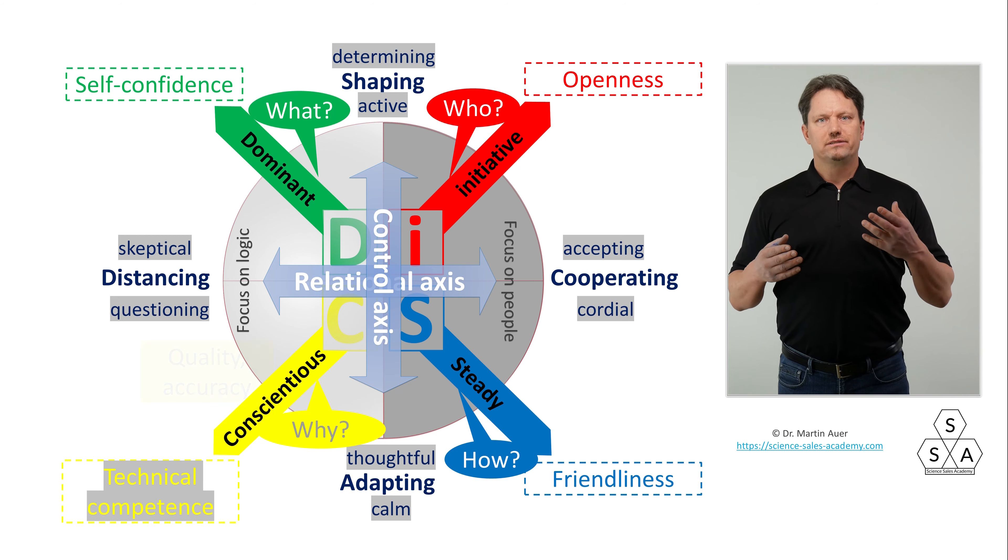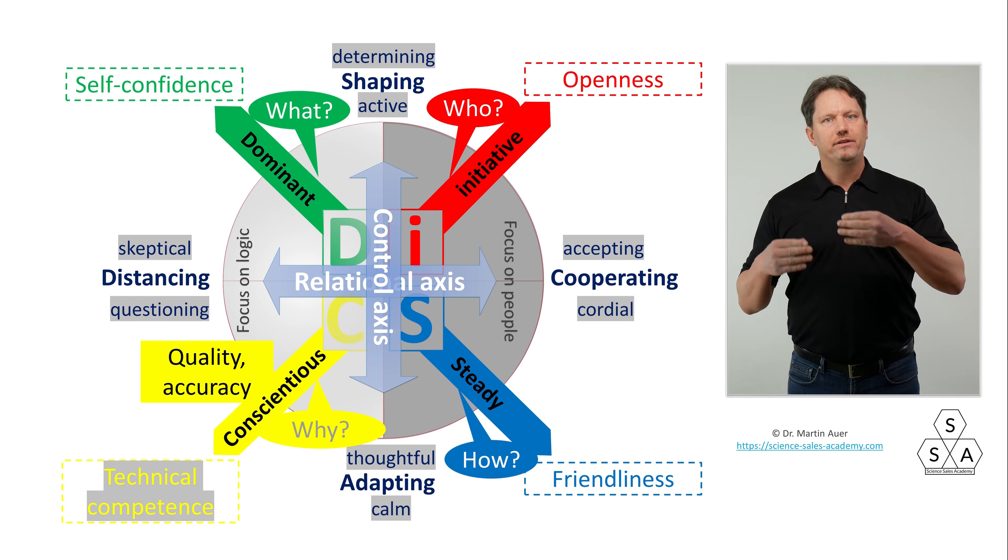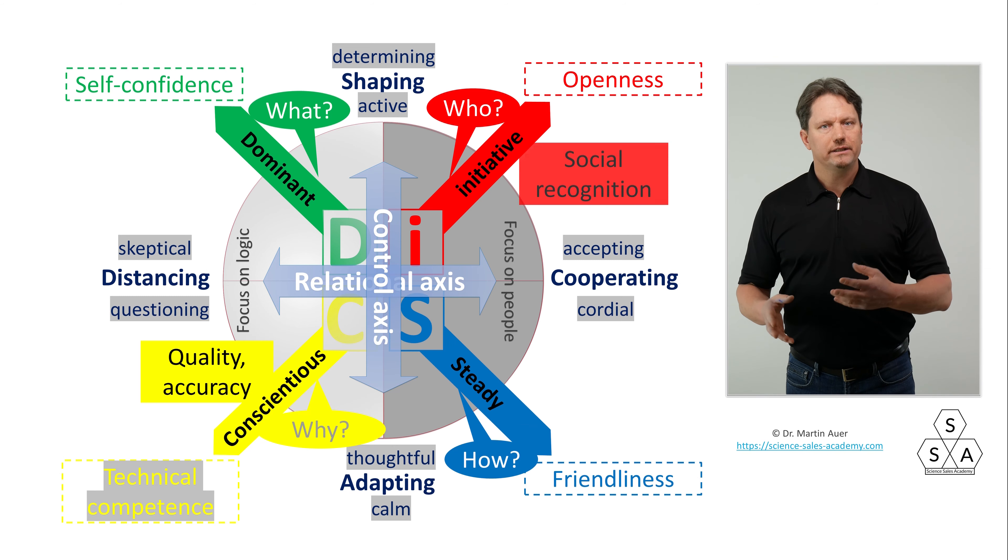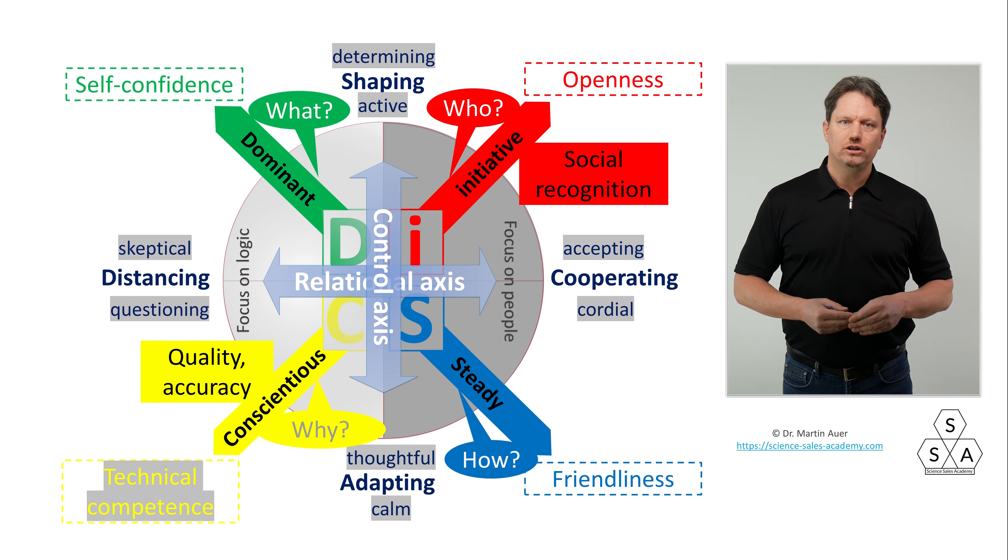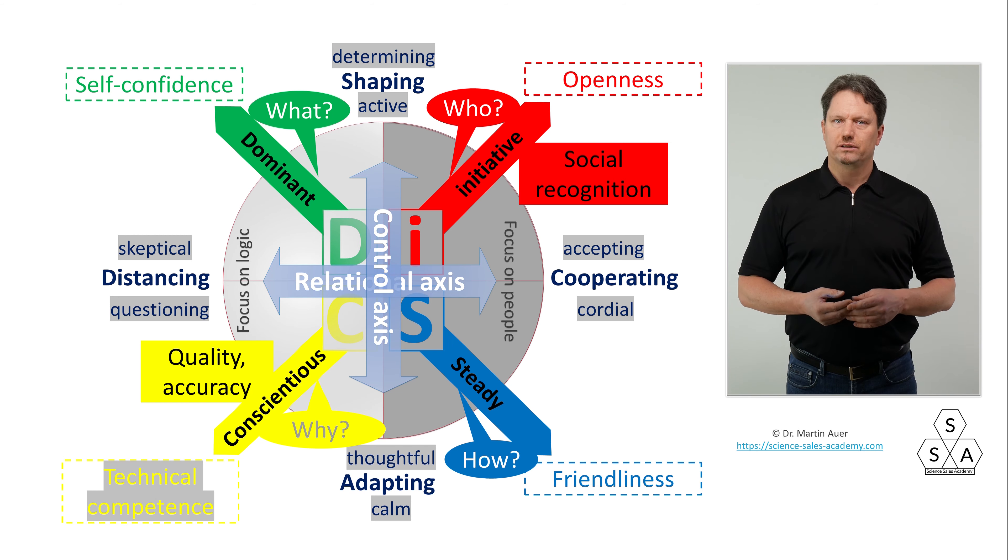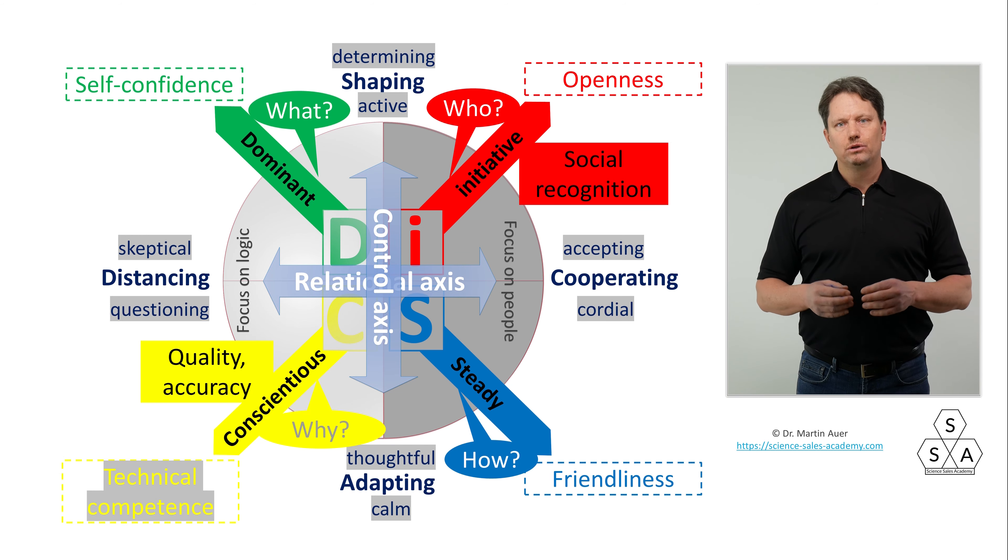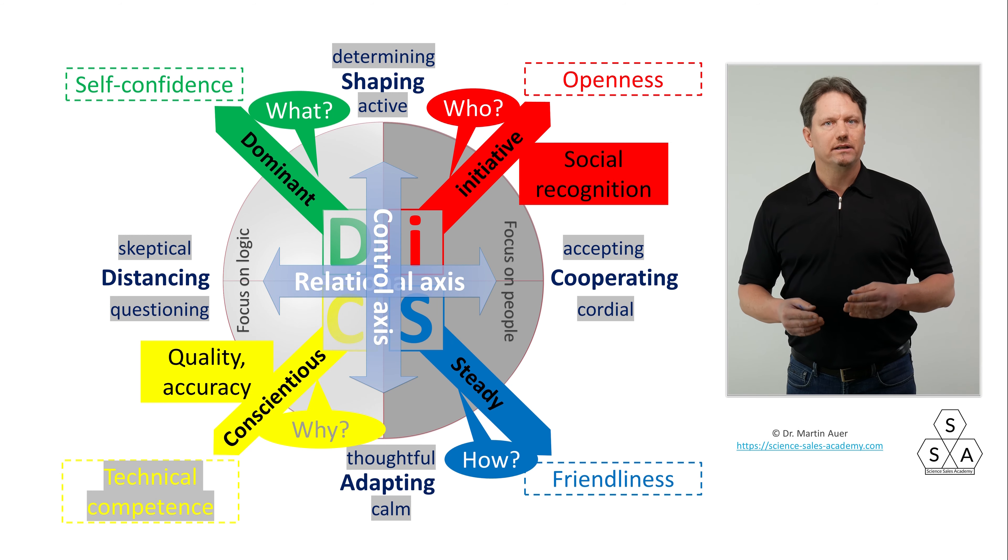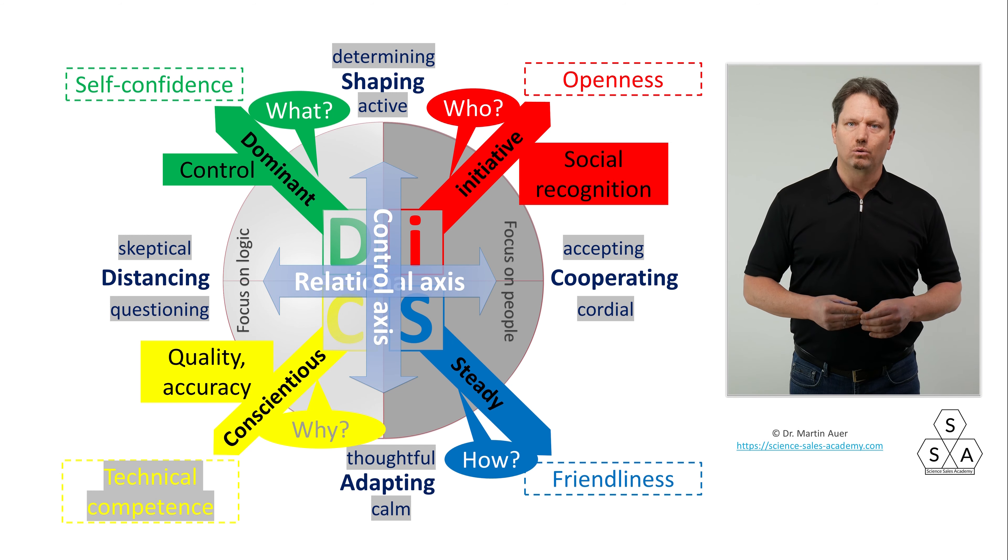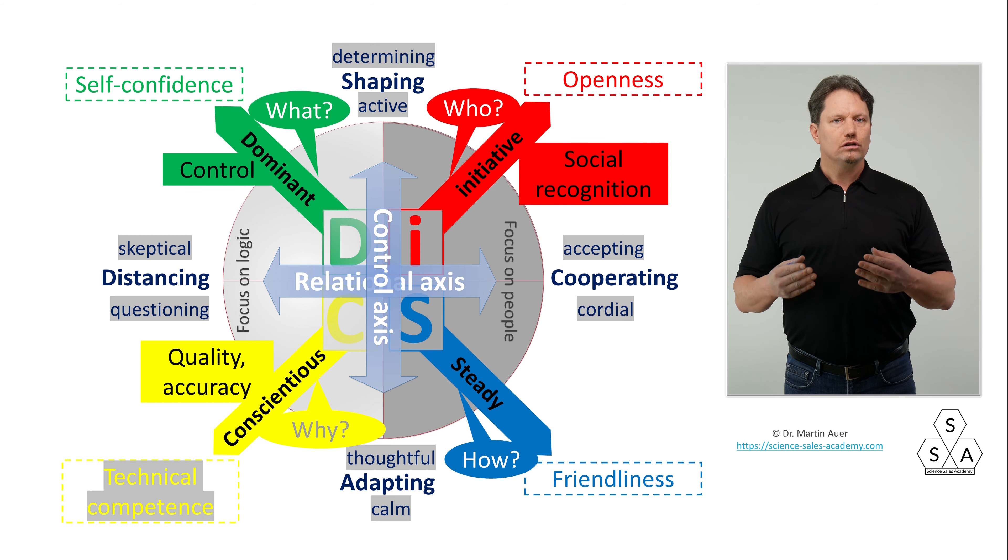Exactly as important it is for the D-type to be able to execute control, to be in charge. Control over their group, over their life, over their subordinates and so on. Control is the most important driver for a D-type. For that, they will always strive. Last but not least, the S-type. And here, the primary drivers are stability and harmony. An S-type will always seek to achieve stability and harmony. This they will always try to reach. This they will always try to defend. Conflicts they will always try to avoid.